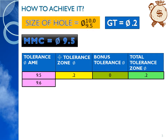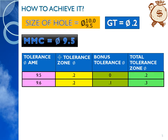If the part is produced at 9.6, we know that the geometric tolerance is constant and stays at 0.2. So the bonus tolerance will be 0.1. Bonus tolerance is calculated as: actual mating envelope minus MMC — that is 9.6 minus 9.5 equals 0.1. That is called the bonus tolerance. The total tolerance will be the sum of position tolerance and bonus tolerance: 0.2 plus 0.1, which equals 0.3.